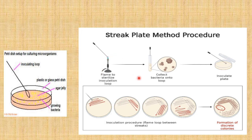You sterilize the inoculating loop and make sure to incubate at 25 degrees Celsius, not 37 degrees Celsius, which is body temperature — because at 37 degrees you can grow dangerous microorganisms harmful to human beings. In the laboratory, you grow microorganisms at 25 degrees Celsius for about two or three days. At the end, you see the formation of colonies — visible colonies of bacteria in the petri dish — which may contain tens or hundreds of thousands of bacterial cells.